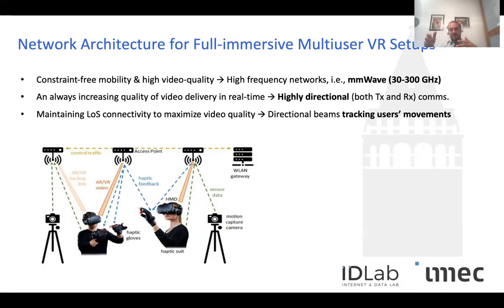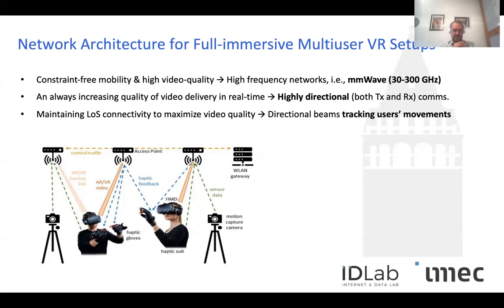For that reason, we need to utilize directional communication at both transmit and receive sides. From the access point, we focus the energy of millimeter wave beams toward the head-mounted device, while at the head-mounted device we focus beams toward the access point — ideally maintaining line-of-sight connectivity to optimize throughput. Under mobility, these directional links must track user directions and ideally predict near-future locations and head rotations to optimize beam tracking performance.